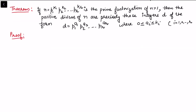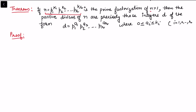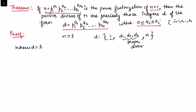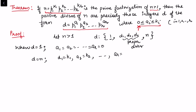We want to prove: if n > 1 has prime factorization p1^k1 × ... × pr^kr, then every positive divisor d takes the same prime form with 0 ≤ ai ≤ ki. When d = 1, all ai = 0, satisfying the condition. When d = n, set ai = ki for all i, so d has exactly n's prime factorization.